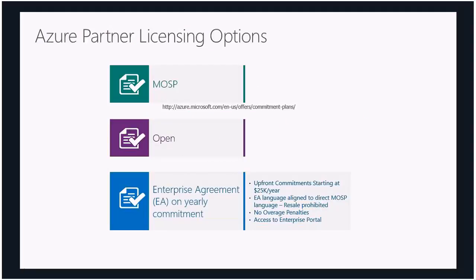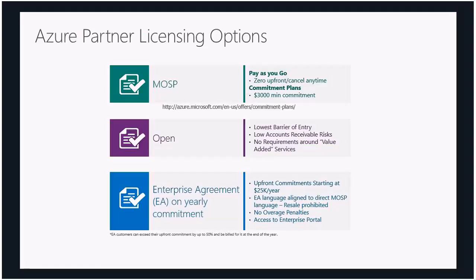Enterprise agreements are generally for much larger accounts. The Microsoft Online Services portal offers pay-as-you-go with no upfront costs — you can cancel at any time. There are also commitment plans: if you're looking at spending $3,000 or more a month on Azure, you can get commitment plans that give you a discount based on volume. The open licensing option has a low barrier of entry — easy for the reseller to order credits and apply those to the Azure account, maintaining control of billing for that tenant and client.